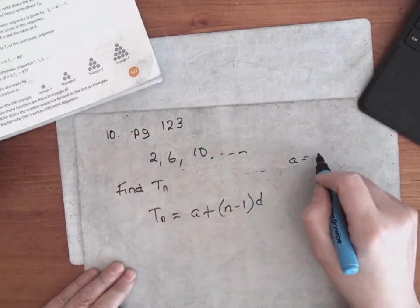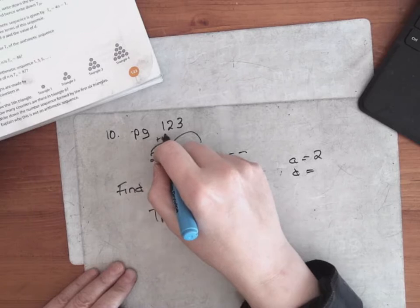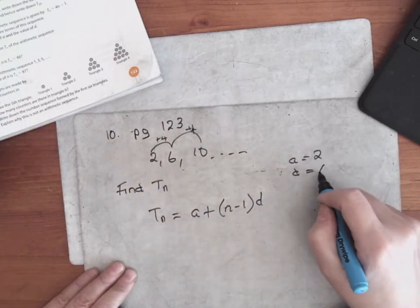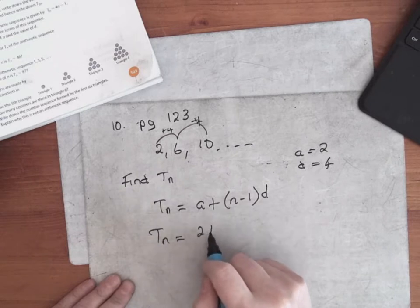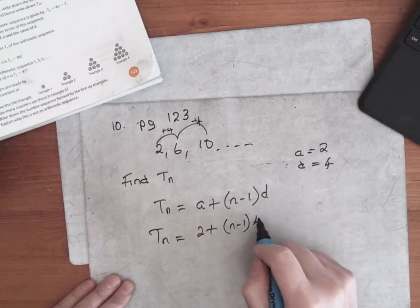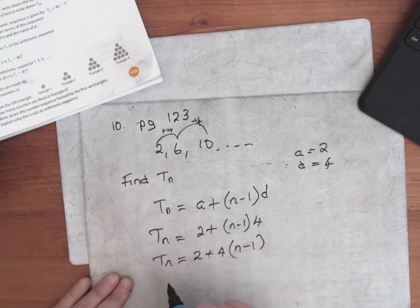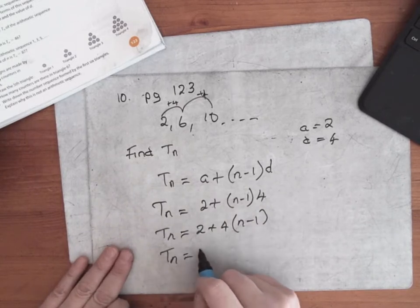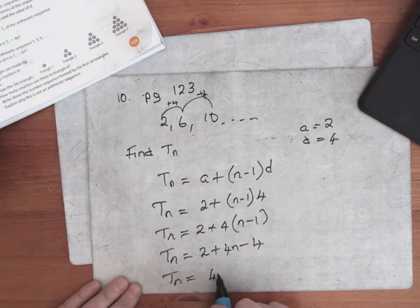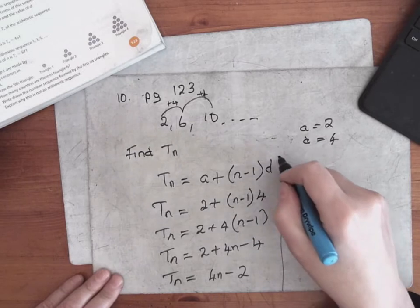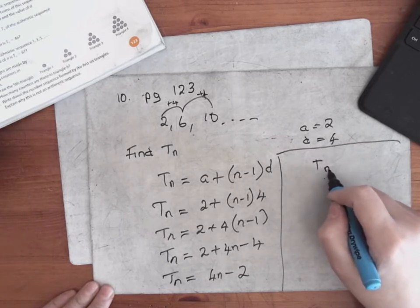I think it's just the same sequence we've just done. So tn — it's an arithmetic sequence so I can use the formula a plus n minus 1 times d. So a is the first term, which is 2, and d is the common difference, which is what you're adding on each time — which is 4. Two to six you add on 4, six to ten you add on 4. So tn is equal to 2 plus 4 times bracket n minus 1. Don't fill in for n.